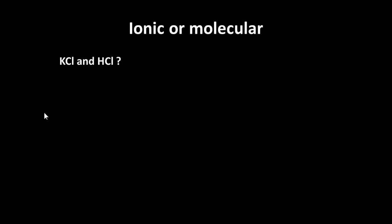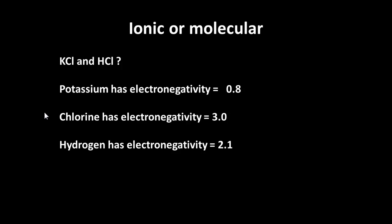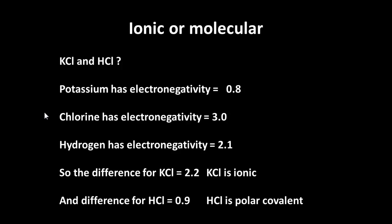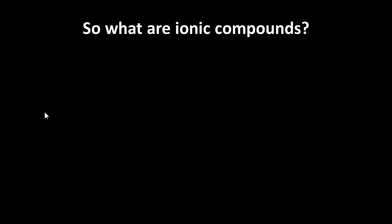Okay, ionic or molecular. Here we have potassium chloride and hydrogen chloride. And if we look at the electronegativities, 0.8 for potassium, 3 for chlorine, 2.1 for hydrogen. So with potassium chloride, the difference is 2.2. So we've probably got an ionic compound there. And the difference for hydrogen chloride is 0.9. So we likely have a covalent bonding there.